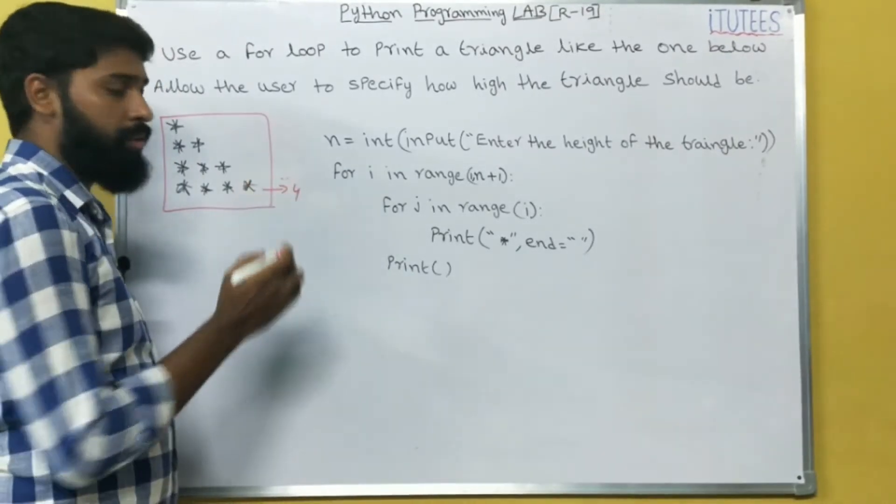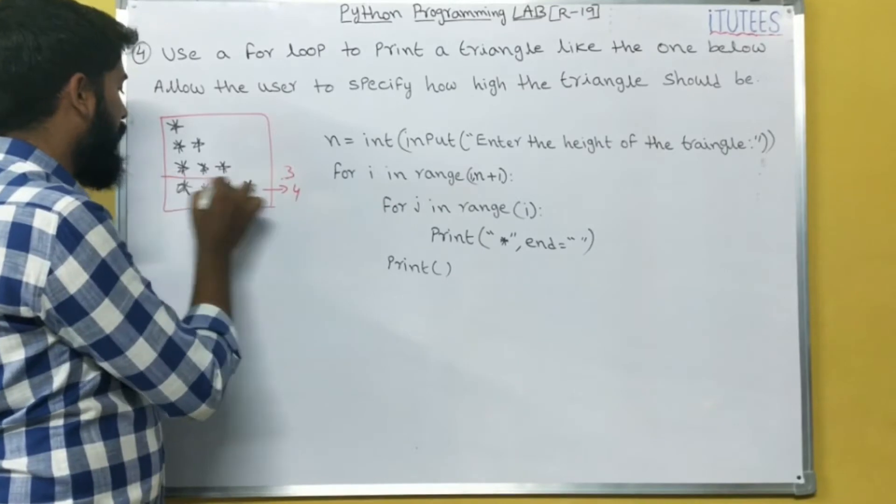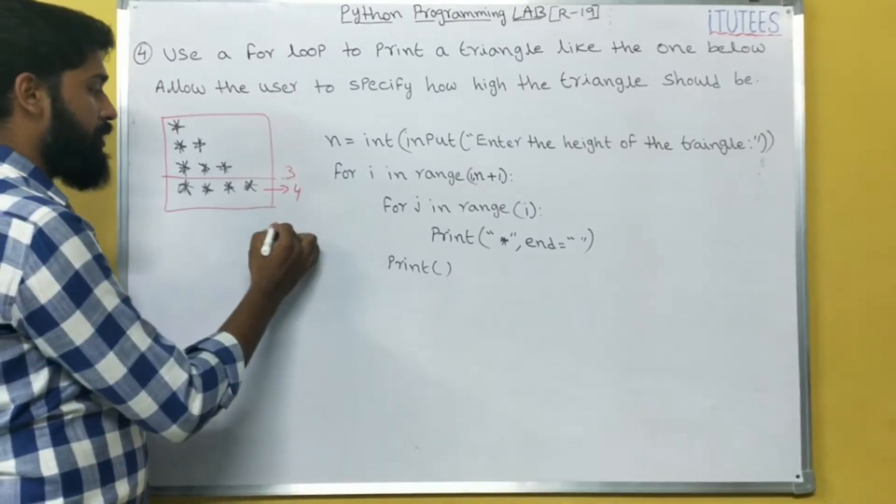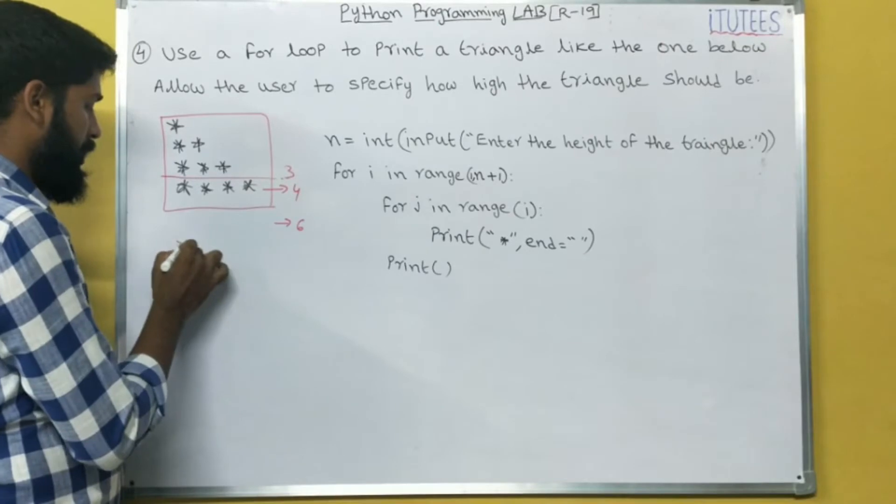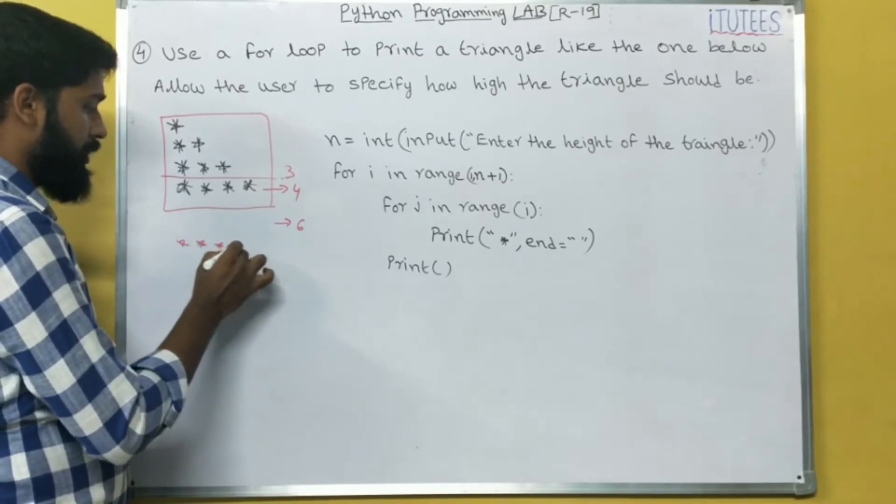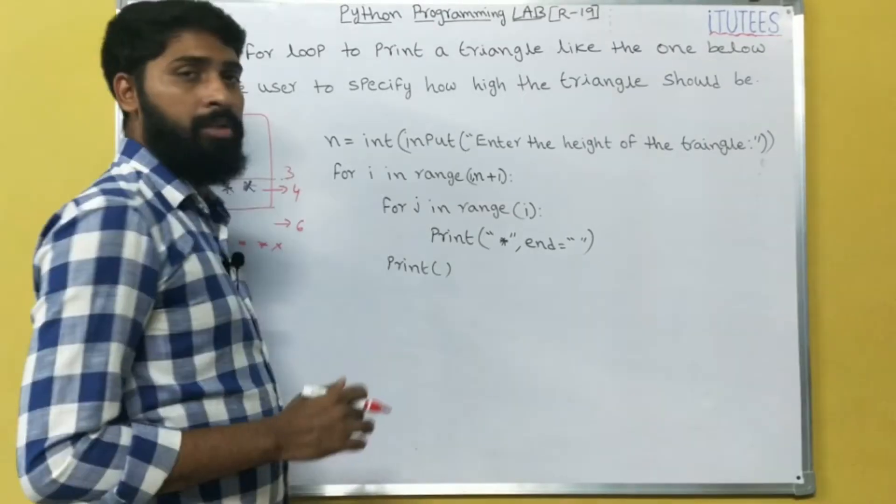For example, if the user gives 3 as input, then the triangle is like this, up to this one. If user gives 6, then asterisk, asterisk, 6 asterisks. Now we see the program.